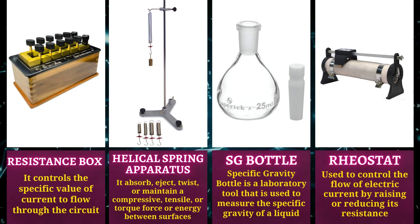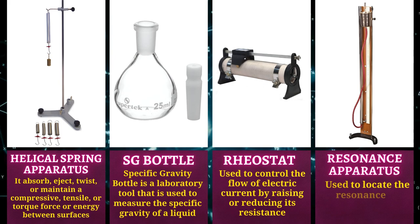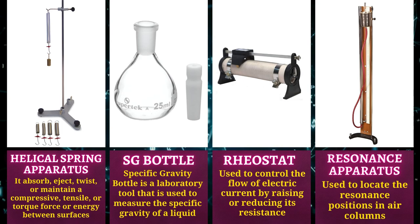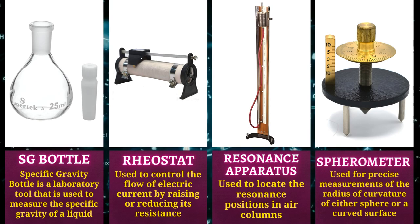Rheostat is used to control the flow of electric current by raising or reducing its resistance. Resonance apparatus is used to locate the resonance positions in air columns.